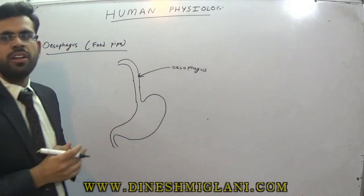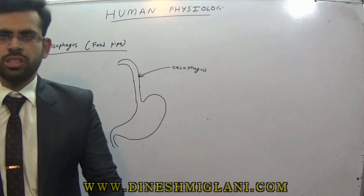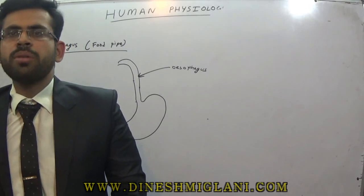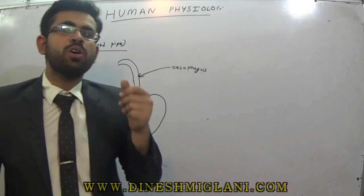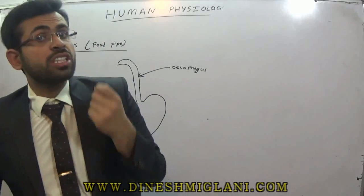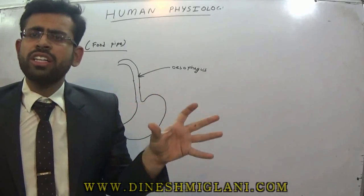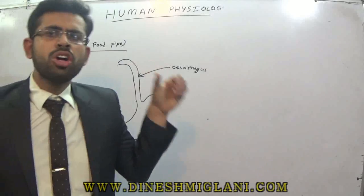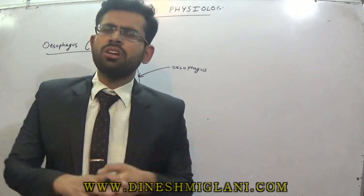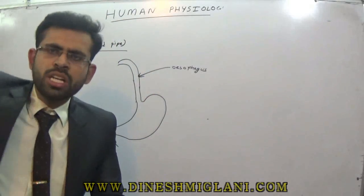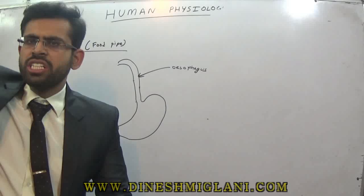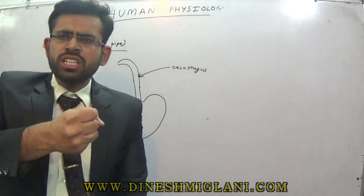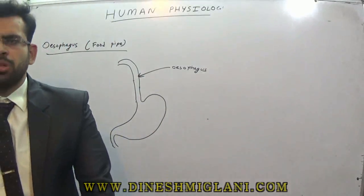This is a very interesting structure. We will study its histology when we study about the tissue. Then you will know what the difference is and what its importance is. It cannot be collapsed — it's not a normal pipe. What happens in a normal pipe? If you break the pressure, the pipe shrinks. But the esophagus can never do that.